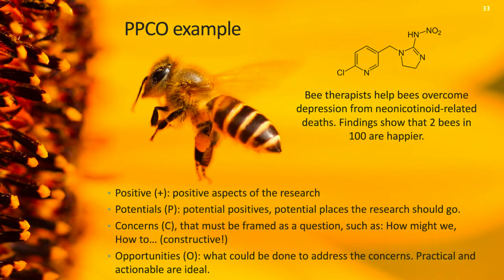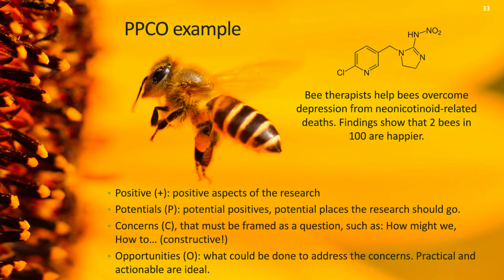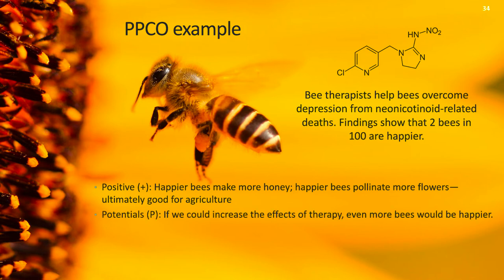So let's see how it plays out in a real example. First, the positives. Well, maybe happier bees make more honey — that's a good thing. Happier bees may pollinate more flowers, and that's good for the bees, good for the flowers, and ultimately good for agriculture. What about potentials? Well, if we could increase the effects of the therapy, even more bees would be happier — and wouldn't that be great?